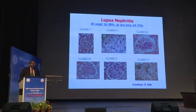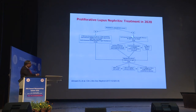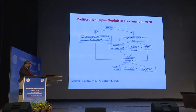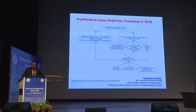Lupus nephritis affects nearly 60 percent of lupus patients at some point. For severe proliferative lupus nephritis, induction is with corticosteroids — pulse solumedrol may be needed. Maintenance is with either MMF or azathioprine; if pregnancy is a consideration, azathioprine is preferred. In some situations, cyclosporine or tacrolimus is used if MMF or azathioprine are not tolerated. Equal attention must be paid to blood pressure control, bone health, and cardiovascular disease prevention.